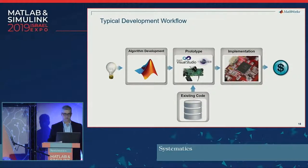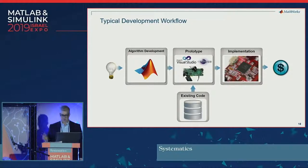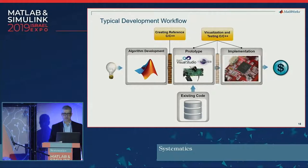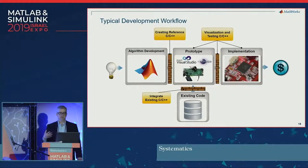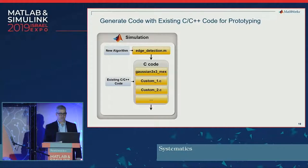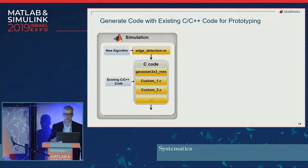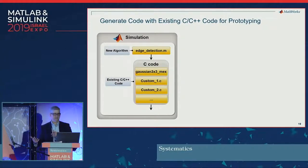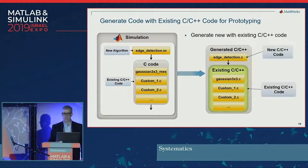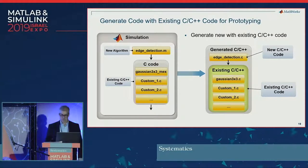Here's the workflow: you develop an algorithm, build a prototype, build an implementation, and work with existing code. The problem is you've got a couple of brick walls — you need to create reference C/C++ code, do visualization and testing, and integrate C and C++. We're going to talk through how we're breaking down those walls. You can take an algorithm, in this case edge detection, combine it with some existing C code, and then generate C/C++ code for that entire project using the ceval function from MATLAB Coder.